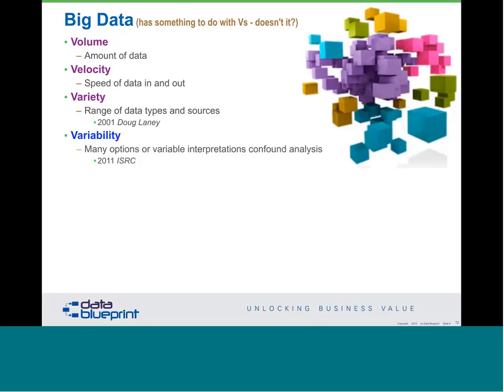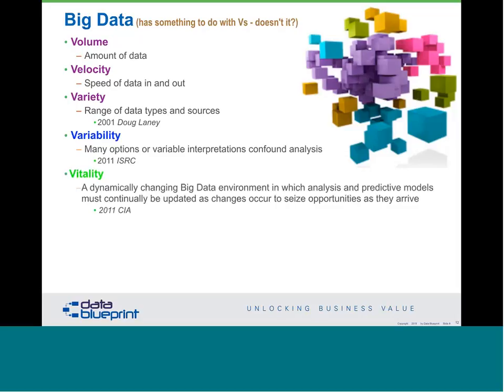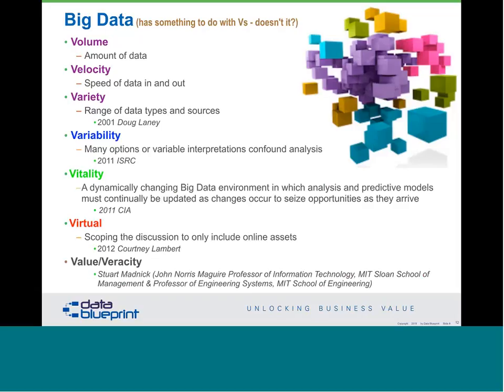We've also seen variable definitions. A 2011 term from the CIA uses 'vitality' to describe big data techniques. Courtney Lambert calls it 'virtual pieces,' limiting the discussion to only online assets. Stuart Madnick at MIT has said we need to put 'value' and 'veracity' in place as well. If all the definitions start with the letter V at the same time, you know the marketing people are winning the argument. So: volume, velocity, variety, variability, vitality, virtuality, value, veracity — wow.